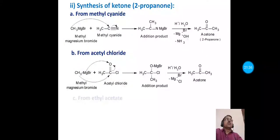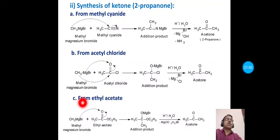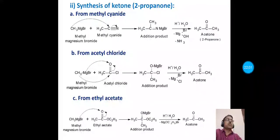Acetone (2-propanone) can also be prepared using ethyl acetate and methyl magnesium bromide. Methyl magnesium bromide is treated with ethyl acetate, forming an intermediate product, which upon acid hydrolysis gives acetone (2-propanone), with magnesium ethoxy bromide as a byproduct.